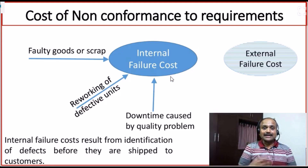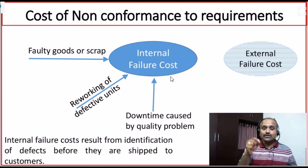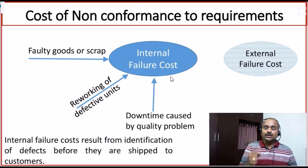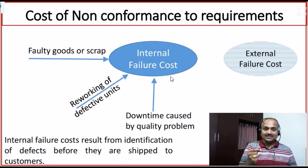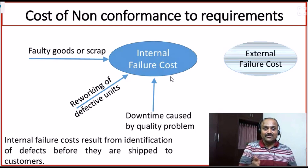How can we do this? As part of our inspections, we can identify a faulty good and decide not to ship it to the customer. Or we identify a defective unit in a product assembly and perform rework on it. Sometimes, because of the quality problem, there may be a downtime in the service we are offering. Whether it is downtime, reworking of defective units, faulty goods, or scrap, we are incurring cost. The good thing is we are stopping one step before delivery to the end customer, but these defects are still costing us dearly.